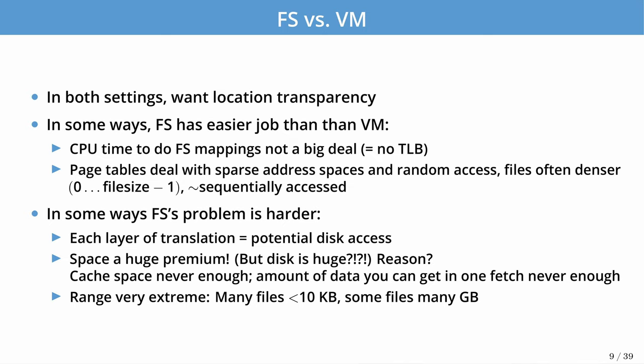In some ways the file system's job is easier than virtual memory. The amount of CPU time you can spend on file system mappings is relatively large — for virtual memory, most things must complete in a matter of cycles. The cost of interposing on memory reads and writes is very expensive compared to disk operations. Also, page tables deal with sparser address spaces and random access patterns, while files tend to be denser and are more often sequentially accessed.